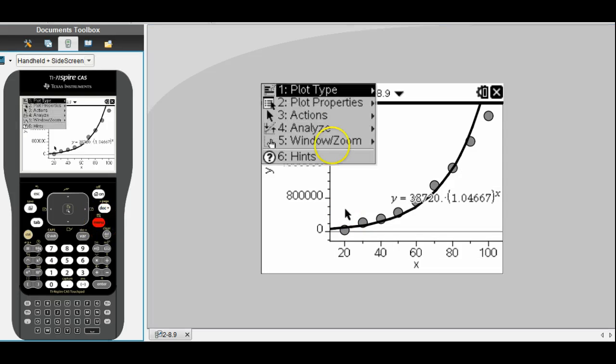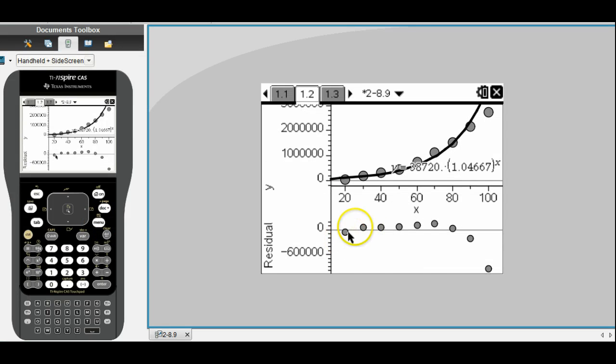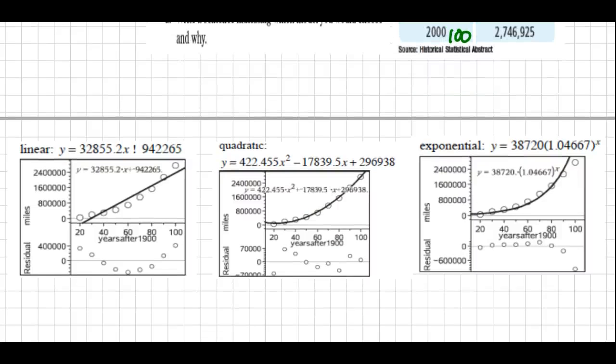To get the residuals, menu analyze residuals residual plot. Then let's make a quick sketch of that as well. So when you're all done, you should have these three pieces. When I did the screenshot for these, the original data plot is there as well with the line of best fit. Know that that is not required for students to draw each and every time. It is the residual plot that really matters for this lesson.